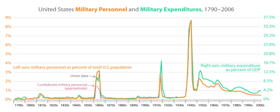This newly formed military, along with state militia forces, the French Army and Navy, and the Spanish Navy, defeated the British in 1781. The new Constitution in 1789 made the President the Commander-in-Chief, with authority for the Congress to levy taxes, make the laws, and declare war.